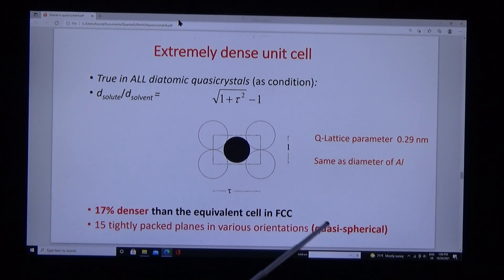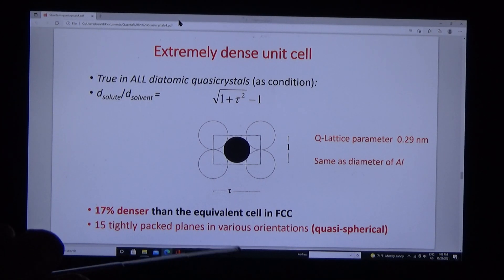They're tightly packed. You can think of the quasi-crystal as being a tightly packed structure of spheres—quasi-spheres—forming an icosahedral structure with these unusual diffraction properties.